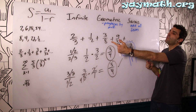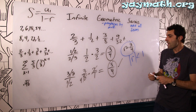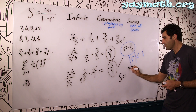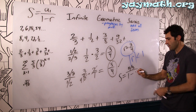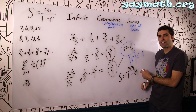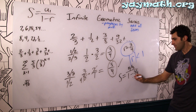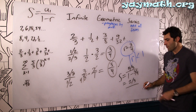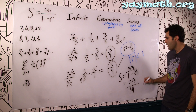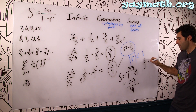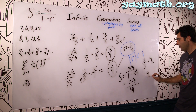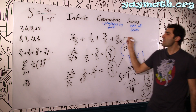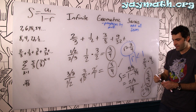Let's find what this infinite geometric series adds up to. The formula: S equals first term, two over three, over one minus the rate three over four. That's the sum of infinite terms. This becomes two over three over one fourth — four fourths minus three fourths is one fourth. Which is the same as two over three times four, which is eight over three — or two and two thirds. All these numbers added up to infinity is nothing more than two and two thirds. Amazing.